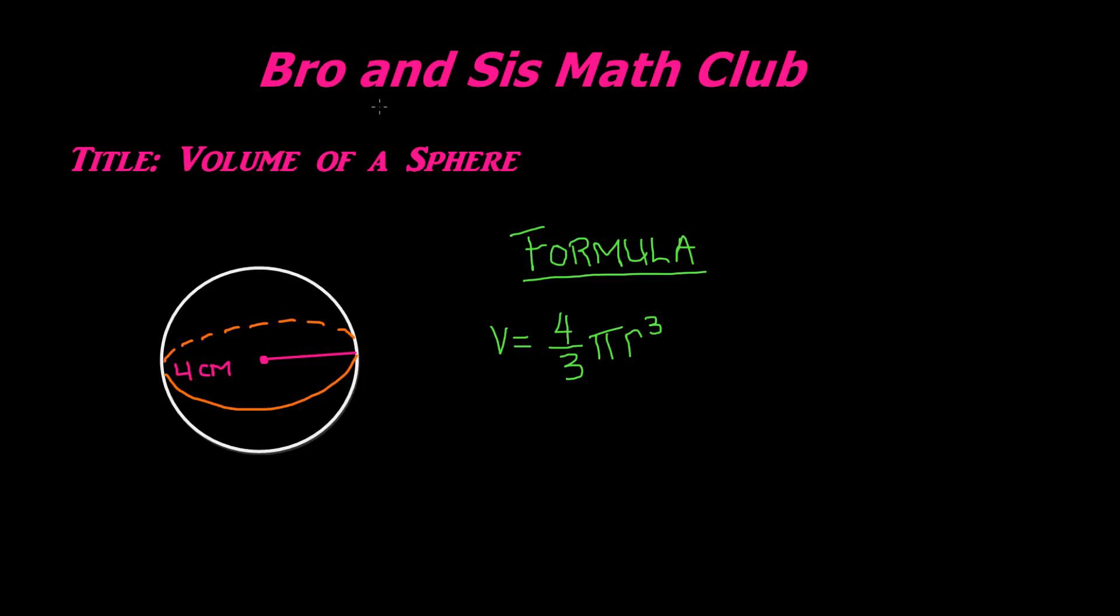The formula for finding the volume of a sphere is 4/3 times pi times radius cubed. 4/3 has an approximate value of 1.33. Pi has an approximate value of 3.14. The radius is the center point of the sphere to the outer part of the sphere. Here it's shown in the pink line. In this sphere, the radius is 4 centimeters.